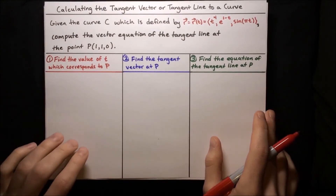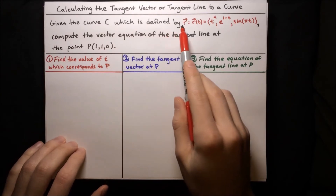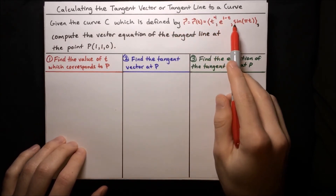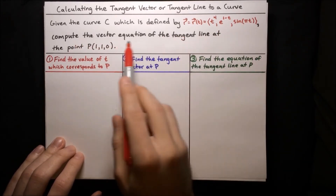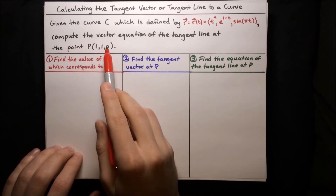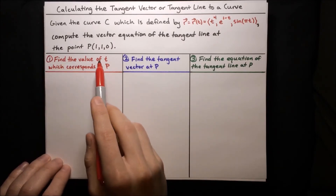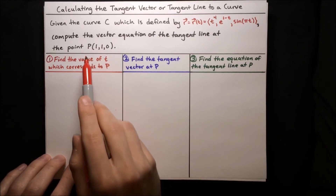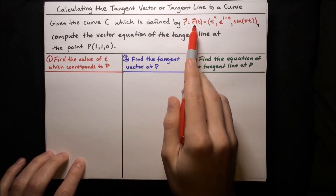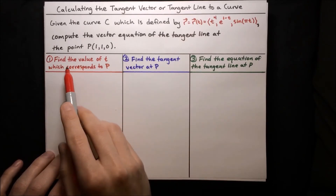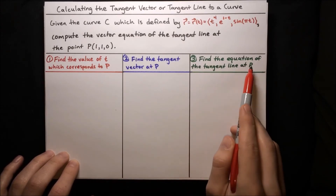Now here's an example where we want to calculate the tangent line to a curve. We're given the curve C defined by this vector function t to the fourth, e to the one minus t, and sine of pi t. We want to compute the vector equation of the tangent line at a particular point P, which is (1, 1, 0). We'll break this down into three steps: first find the value of t corresponding to P, then find the tangent vector at P by differentiating, and then use that information to find the equation of the tangent line at P.